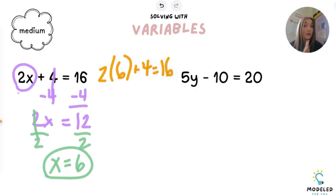Something very important to remember when checking is you have to use the order of operations—PEMDAS. So first, I'm going to multiply. 2 times 6 gives me 12, and when using the order of operations, we bring everything else down with it. So 12 plus 4 equals 16.